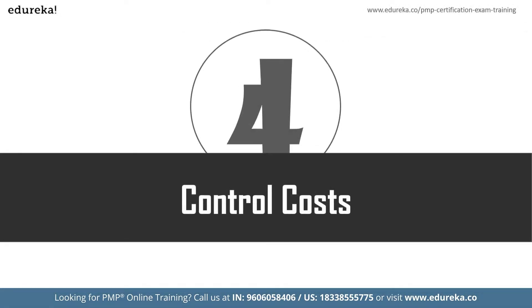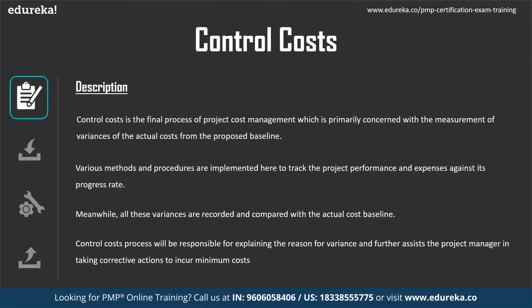The final process is control cost — the process of monitoring the status of the project to update project costs and managing changes to the cost baseline. It falls under the monitoring and controlling process group. Control cost is primarily concerned with measuring variances of actual cost from the proposed baseline, implementing methods and procedures to track project performance and expenses against progress, recording all variances and comparing with actual baselines, and raising change requests where corrections are required.